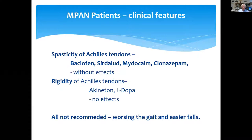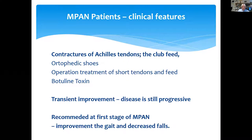For spasticity of Achilles tendons, we used treatment: Baclofen, Clonidine, and other agents, but the rigidity of Achilles tendons was progressive. For contractures of Achilles tendons and club feet, orthopedic shoes were used to help patients, along with some surgical treatment of short tendons and feet. We also used botulinum toxin, but this only gave transient improvement. The disease is still progressive.